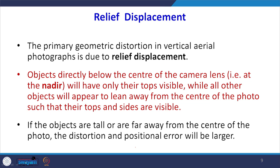Because of these differences, photographs cannot replace topographical maps — we have to remove all distortion, understand the scale, and then we can use them. The primary geometric distortion in the vertical photograph is due to relief, due to the height. Objects which are directly below the nadir will have only their top visible. But as you move away from the principal point, you will find the top of the object as well as the bottom. If objects are tall and far away from the centre of the photo, the distortion and positional error will be larger.